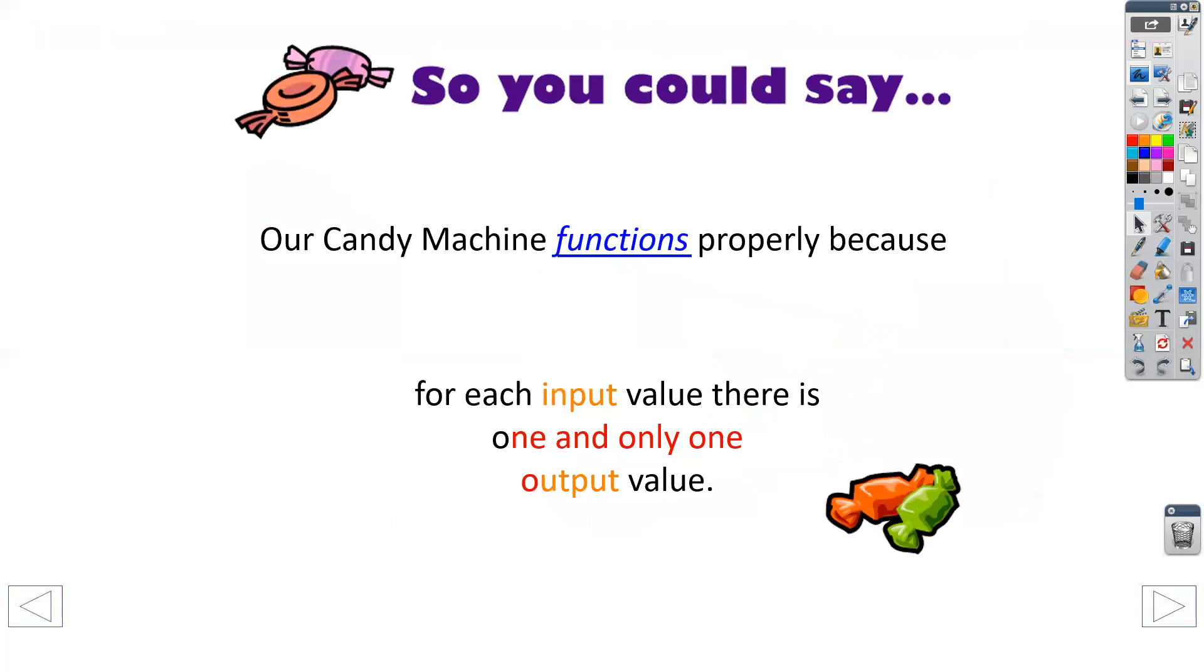So our candy machine, it functions properly because for each input value, there was one and only one output value. So every time I input a number, a button, one, two, three, four, five, six, I only got one output, which was the candy bar.